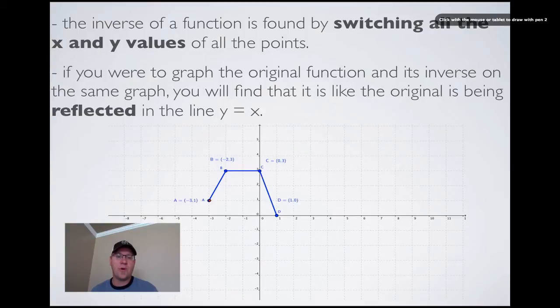We're going to switch all the x and y values of all the points. There are four main points here. Point A is at (-3, 1); switching x and y gives us (1, -3). If we switch those two, it's now (3, -2). Point C was at (0, 3); switching gives us (3, 0). And point D, which was at (1, 0), is now at (0, 1). Connecting the dots, we can see this new function.